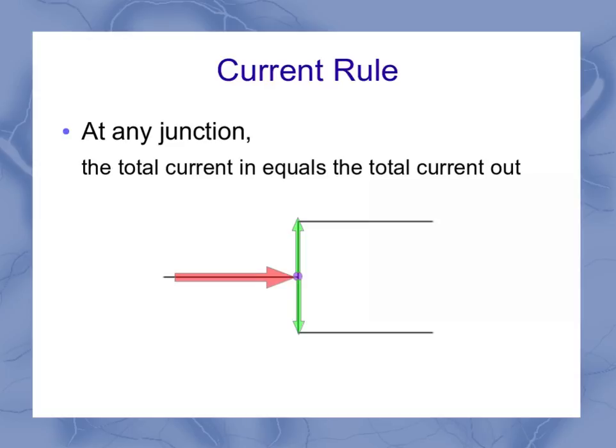If I were to label these currents as I1, I2, and I3, I could write this up as an equation, giving us I1 equals I2 plus I3.